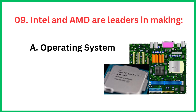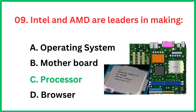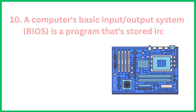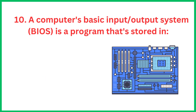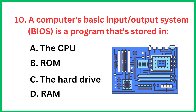Intel and AMD are leaders in making — the correct answer is option C: processor. A computer's basic input/output system is a program that is stored in — the correct answer is option B: ROM.